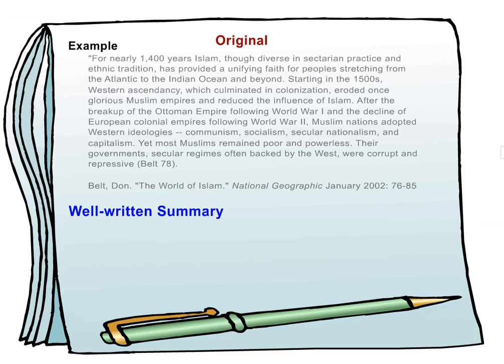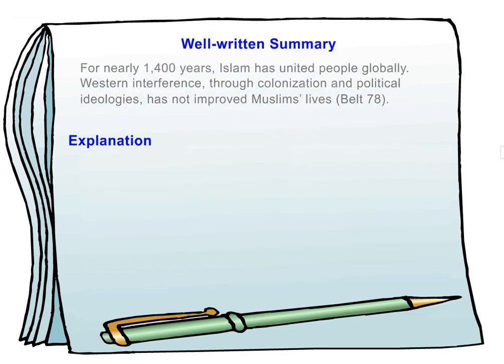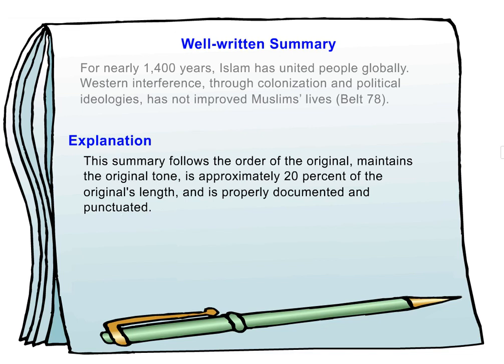Well written summary: For nearly 1,400 years, Islam has united people globally. Western interference through colonization and political ideologies has not improved Muslims' lives. Explanation: This summary follows the order of the original, maintains the original tone, is approximately 20% of the original's length, and is properly documented and punctuated.